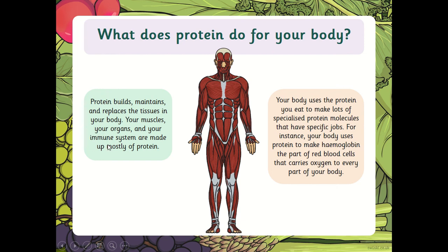The immune system is what keeps you healthy and fights off infections, and it is made up mostly of protein. Your body uses the protein you eat to make lots of specialised protein molecules that have very specific jobs. For instance, your body uses protein to make haemoglobin, which is part of the red blood cells that carries oxygen to every part of your body. Really important jobs — which is why we eat a balanced and varied diet.